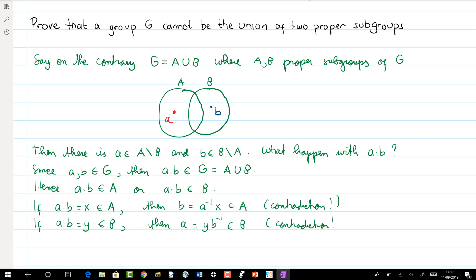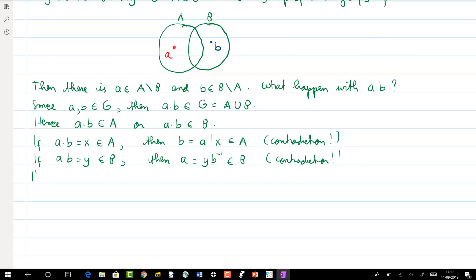So ab cannot be in A and cannot be in B, but that's not possible since G is A union B. So then G cannot be equal to the union of two proper subgroups for any A and B proper subgroups of G.